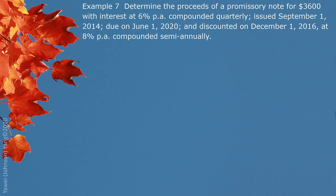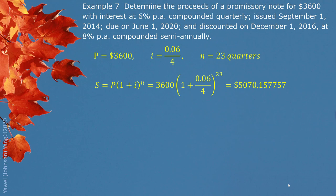Example 7: Determine the proceeds of a promissory note for $3,600 with interest at 6% compounded quarterly, issued September 1, 2014, due on June 1, 2020, and discounted on December 1, 2016 at 8% compounded semiannually. Here we see the whole process. The face value is $3,600 as the present value for the note. The interest is compounded quarterly at 6% divided by 4 as the periodic rate. For the term of the note from September 1, 2014 to June 1, 2020, we have 23 quarters, so we calculate the maturity value first — this is the true value of the promissory note — which is $5,070.16.